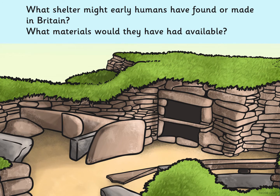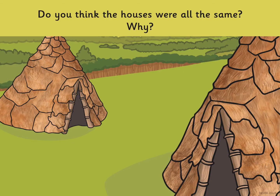What shelter might early humans have found or made in the UK or around the world? What materials do you think they would have available? Have a look at the picture and tell an adult at home. Do you think the houses were all the same? They were not all the same, because in different countries different materials were available.